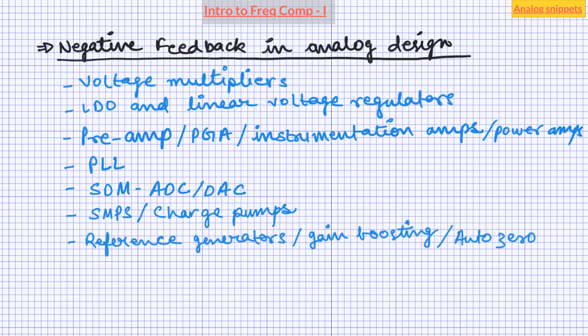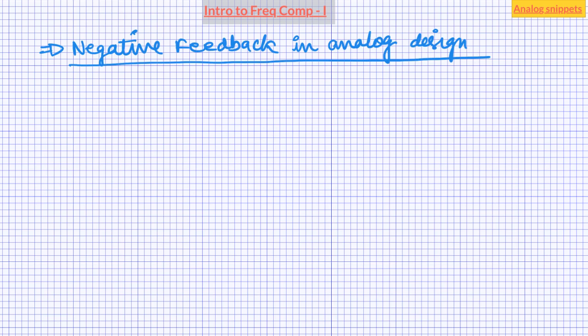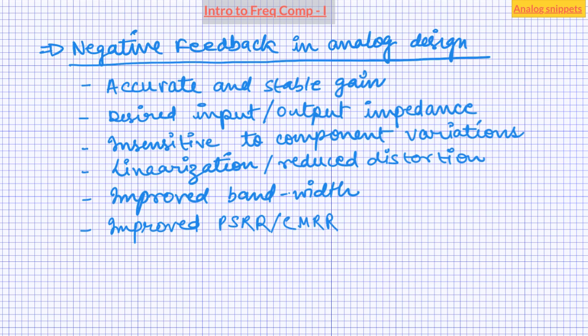As a matter of fact, if you want to be a competent analog design engineer, then you need to develop a sound understanding of negative feedback systems. Notwithstanding the wonderful properties of negative feedback, negative feedback systems are prone to become unstable. And that is why ensuring the stability of a negative feedback system — or so-called frequency compensation — is one of the most important aspects of designing negative feedback systems.